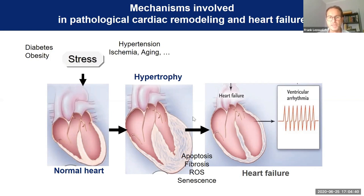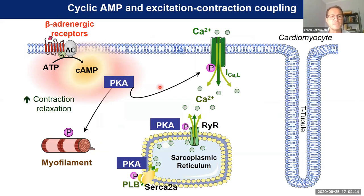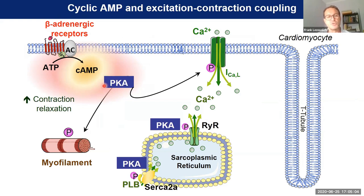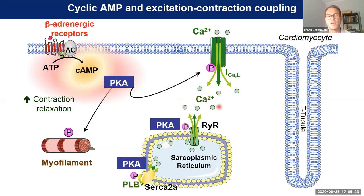Cyclic AMP is an important second messenger in the heart because it regulates various calcium handling proteins. It is produced following the activation of the beta-adrenergic receptor, which are key receptors involved in the regulation of the contraction-relaxation cycle. Cyclic AMP induces biological effects via the classical effector protein kinase A. In cardiac myocytes, PKA is well known to regulate various calcium handling proteins, such as the L-type calcium channel, the ryanodine receptor, phospholamban, and the myofilaments. This acute stimulation of the beta-adrenergic receptor has beneficial effects in the heart.